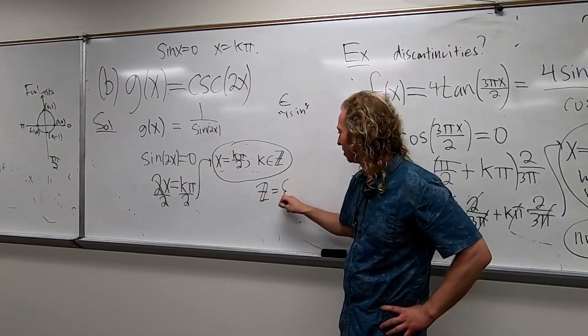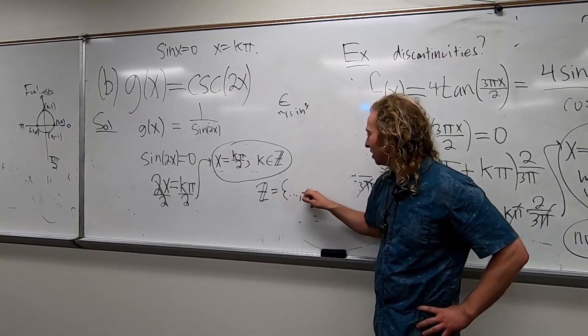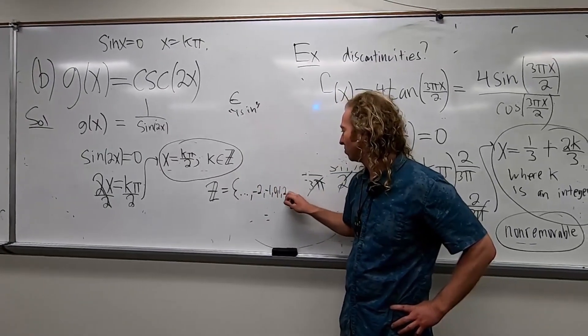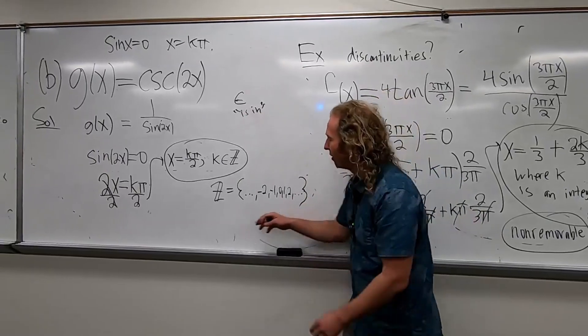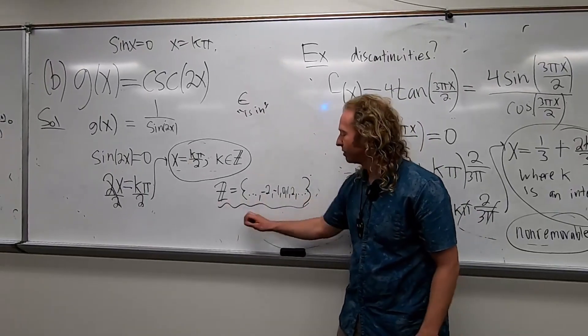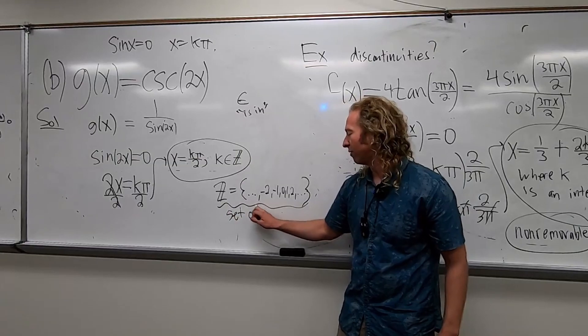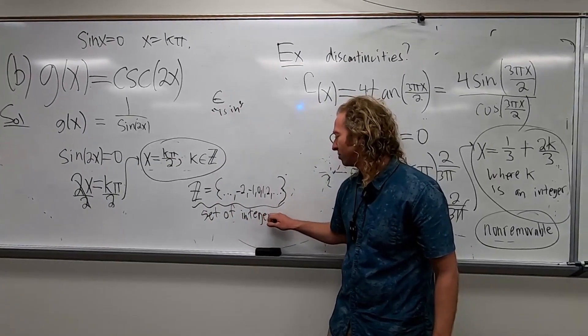It's equal to the set as dot, dot, dot, negative 2, negative 1, 0, 1, 2, dot, dot, dot. This is the set of integers. Set of integers. This is not in the book.